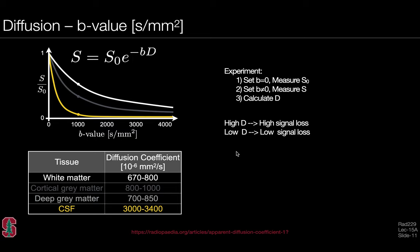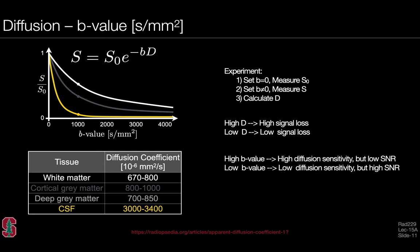It is important to consider tissue diffusivities: high diffusion coefficients lead to high signal losses because signals cannot be rephased easily, while low diffusion coefficients result in lower signal attenuation on the DWI. In designing the experiment, a high B-value—such as 2000, 3000, or 4000 s/mm²—gives high diffusion sensitivity but low SNR due to substantial signal attenuation. A low B-value gives high SNR but low diffusion sensitivity. Choosing the B-value is an optimization balancing diffusion contrast between tissues against the noise floor.